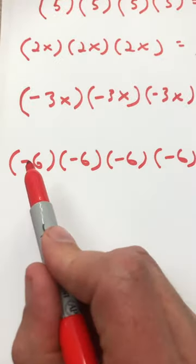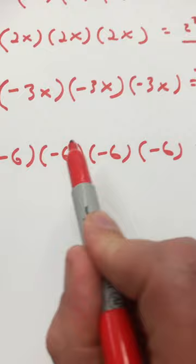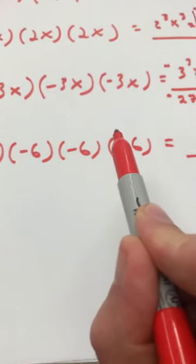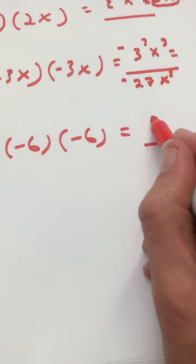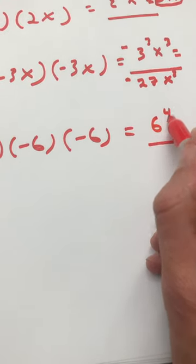Now, if we have an even number of negative signs, like negative 6 times negative 6 times negative 6 times negative 6, all the negative signs cancel out, and we just get 6 to the fourth power.